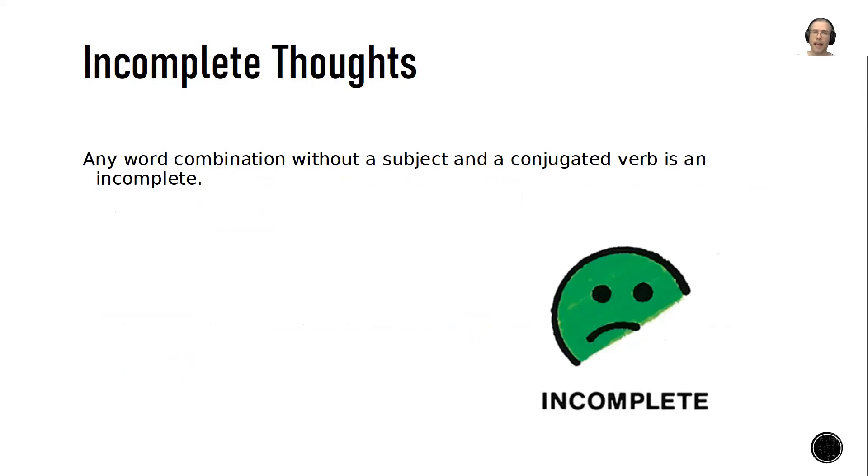Incomplete thoughts. Any word combination without a subject and a conjugated verb is an incomplete thought. You are looking at something that lacks at least one of the key necessary elements for the sentence to actually be a proper sentence, for it to be an independent clause. It therefore cannot stand alone as a complete thought.